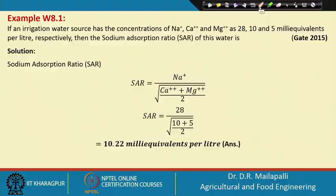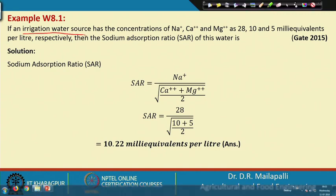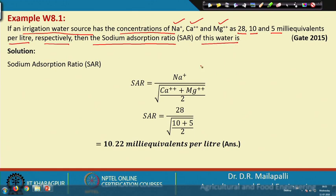In this first example, an irrigation water source has a concentration of sodium, calcium, and magnesium of 28, 10, and 5 milliequivalents per litre respectively. The sodium absorption ratio SAR of this water is to be determined. This is a direct formula-based problem.